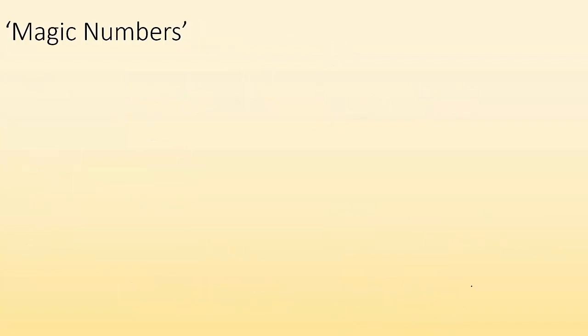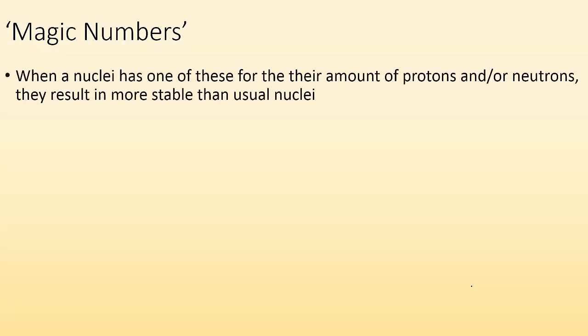So what about these magic numbers? It's kind of like these elements are superstitious and they got lucky numbers. When a nuclei has one of these for their amount of protons and or neutrons, they result in a more stable than usual nuclei. And these are the magic numbers: 2, 8, 20, 28, 50, 82, and 126 for neutrons. Because we got more than that in protons, we start getting with things that are super radioactive or too big.